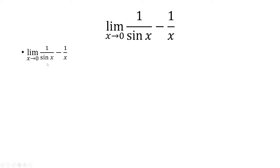Let's bring this all into one fraction. Get a common denominator of x times sine of x. We're going to multiply the first fraction by x, the second fraction by sine of x.